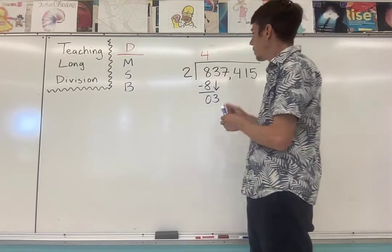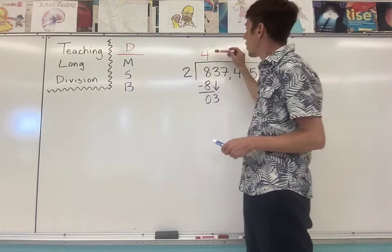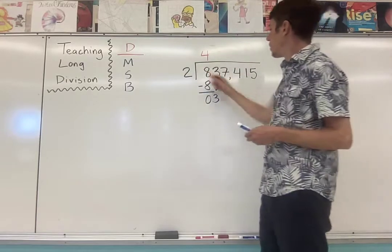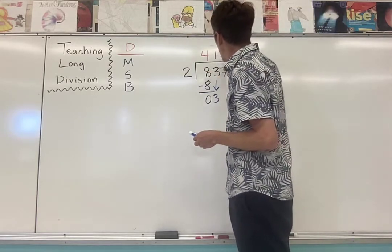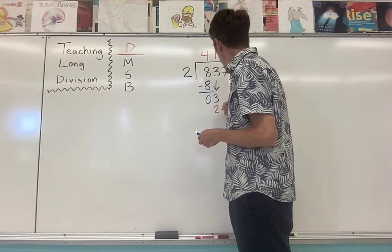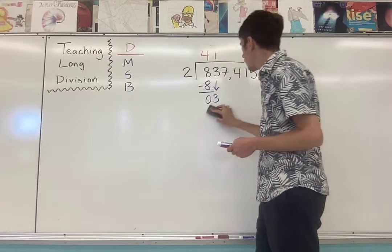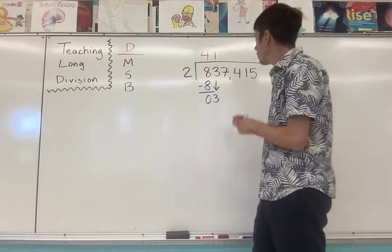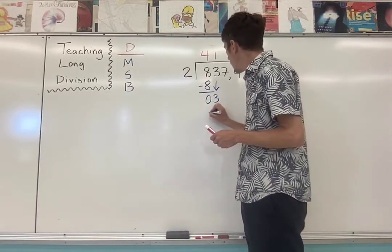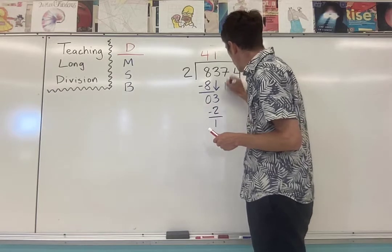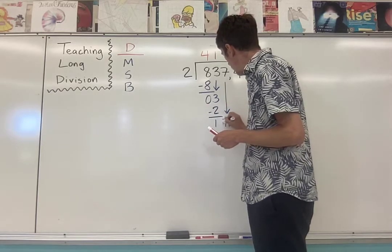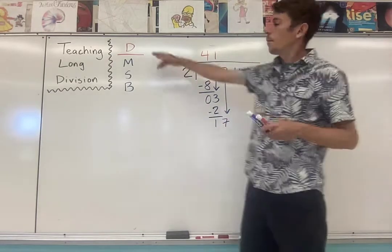Two goes into three. So now we're back to the division step. We know that answer goes up on the roof. Two goes into three once because two times one is two. Three minus two is one. Bring down the seven. Now we're back to the top. Divide.